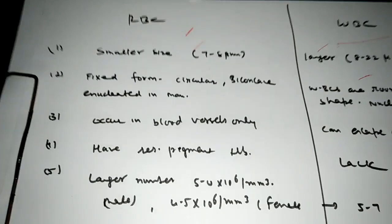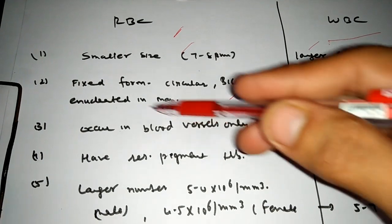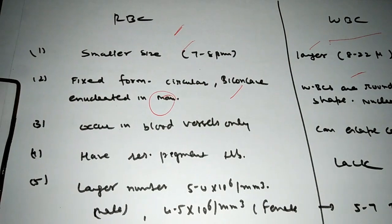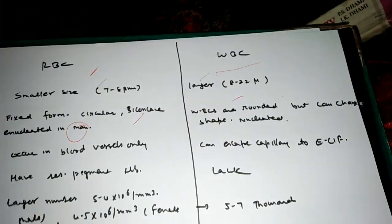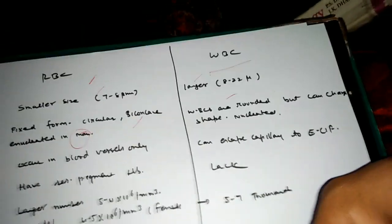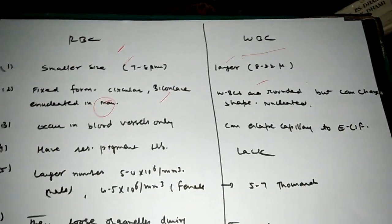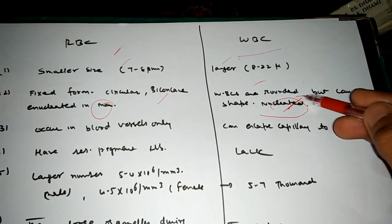Next is the fixed form. The RBC do not change the shape and they are circular, biconcave and enucleated in man. If I discuss about the WBC, the WBC can change the shape. They may be rounded, they may be somewhat large or cylindrical according to the situation, and all the WBC are nucleated.